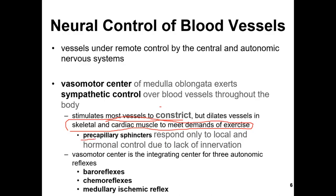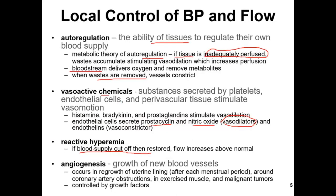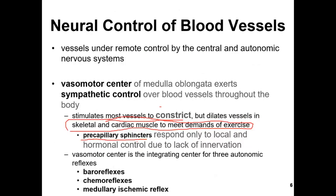When you read about capillary beds, you know that we have pre-capillary sphincters — located mostly in the muscles and intestines. They have a structure that responds only to local and hormonal control due to lack of innervation. The vasomotion center is an integrated center of three autonomic reflexes: the baroreflex, chemoreflex, and medullary ischemic reflex.